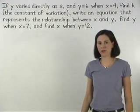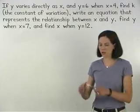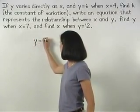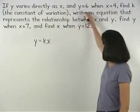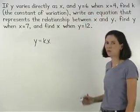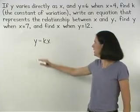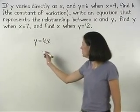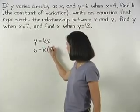We know that if y varies directly as x, then we can use the formula y equals kx. And we're given that y equals 6 when x equals 4. So we can substitute these values into our formula for x and y to get 6 equals k times 4.